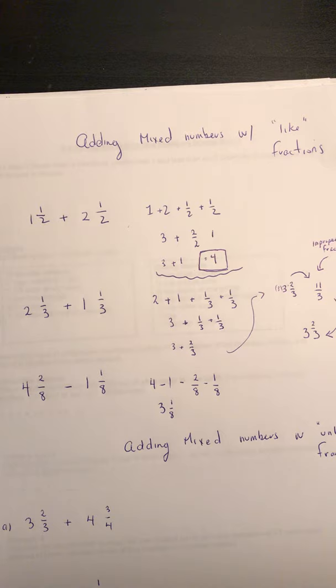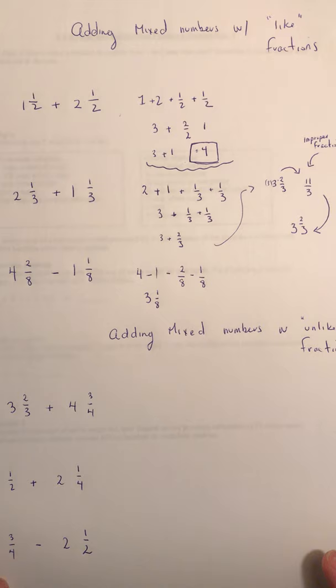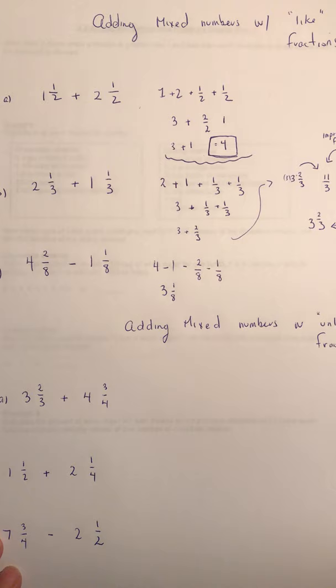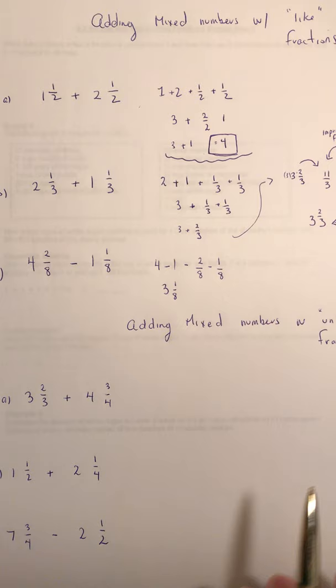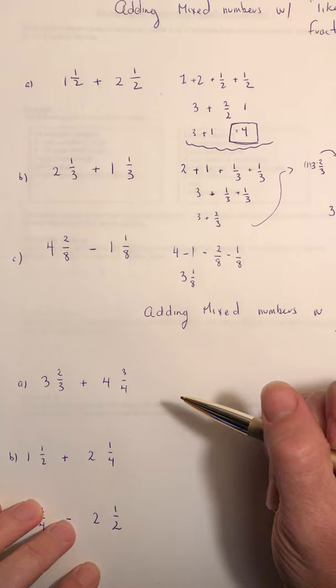Now let's figure out adding mixed numbers with unlike fractions. One way to do it is to convert to an improper fraction, find the common denominator, then convert back to a mixed number — it's a lot of work. So we'll do two examples here and I'll assign the third one for homework along with a couple of other questions.